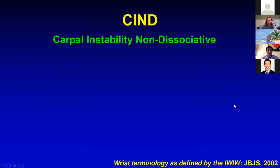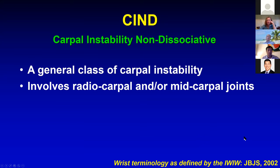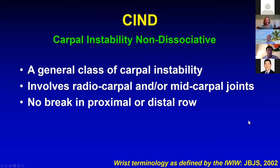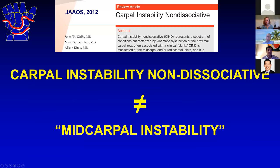Carpal instability non-dissociative is a general class of instability involving the radiocarpal joint, the mid-carpal joint, or both. There's no break in the ligaments of the proximal or distal carpal row. There are multiple different types and etiologies. What I'd like to get across — as we tried to publish in 2012 — is that CIND is not synonymous with what we call mid-carpal instability. Calling this mid-carpal instability is actually a misnomer and we should get away from that.